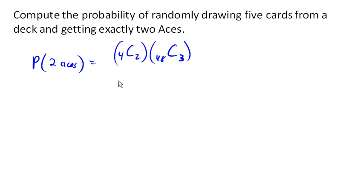And that's out of all the ways that you can choose five cards out of 52. And that turns out to be about .0399. So there's about a 4% chance that out of a five card hand, that you'll have exactly two aces, a pair of aces, in that hand.